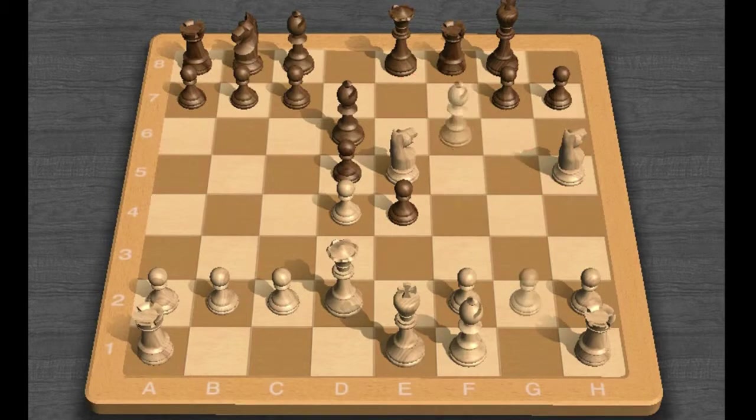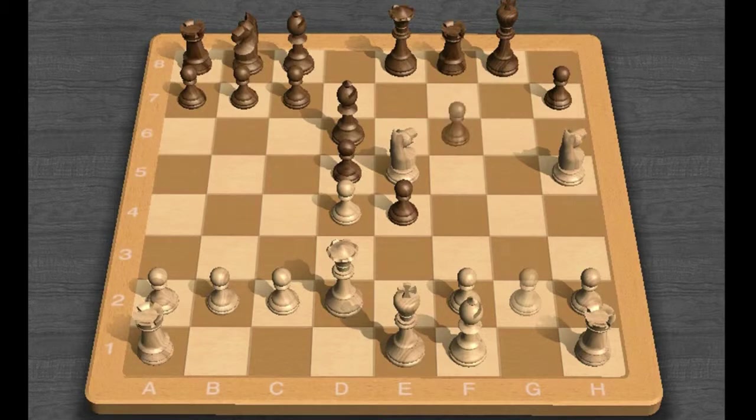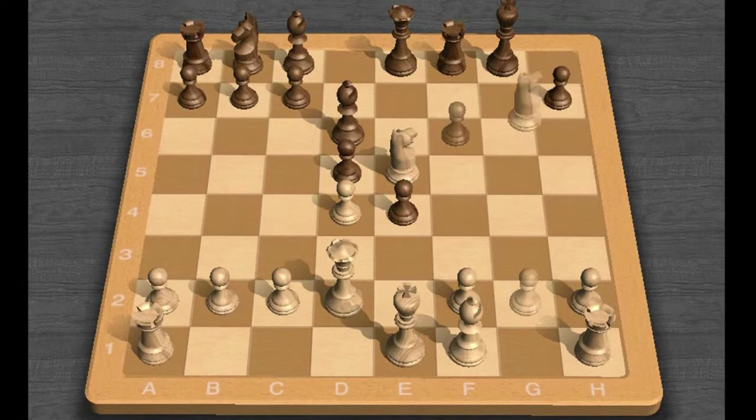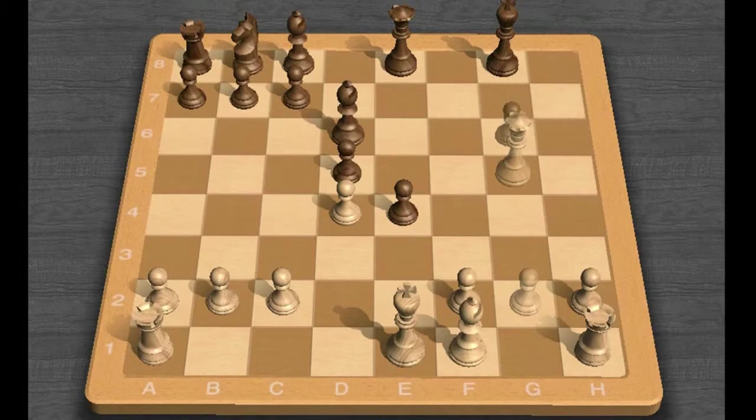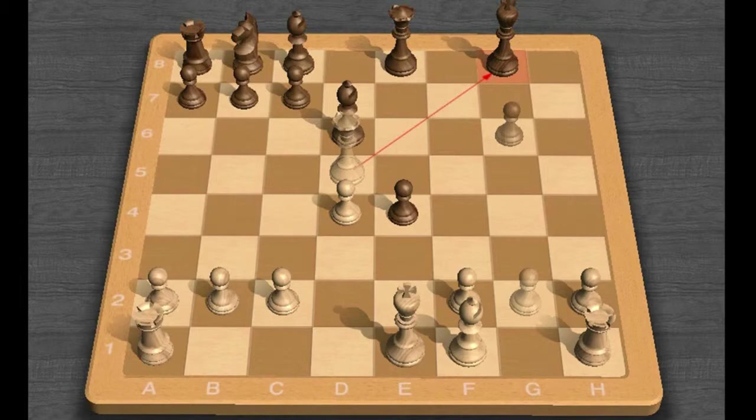Bishop captures F6 was better, with the main point being G captures F6, Knight captures F6 check, Rook captures F6, Queen G5 check, Rook G6, Knight captures G6, H captures G6, Queen captures D5, and the position looks roughly even.